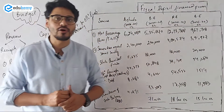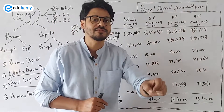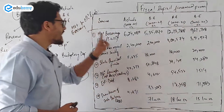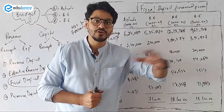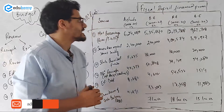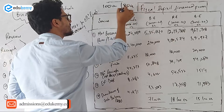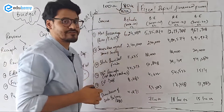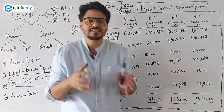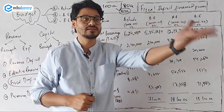The books simply mention that the source of fiscal deficit is market borrowing and other liabilities. But a question might come: what are these other liabilities? When the government has an expenditure of say 100 crore and income of 80 crore, there is a deficit of 20 crore. From where will this 20 crore be borrowed by the government? This 20 crore can be borrowed from the market — that will be known as market borrowing — or from other liabilities.